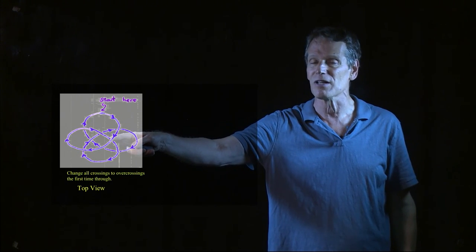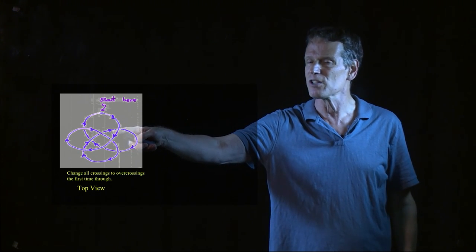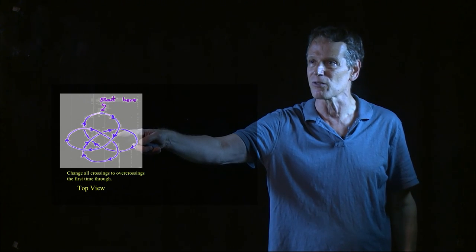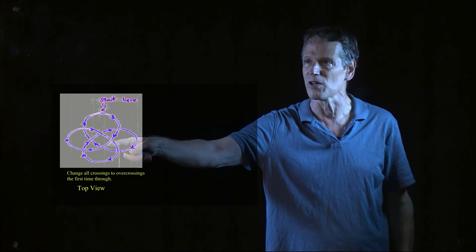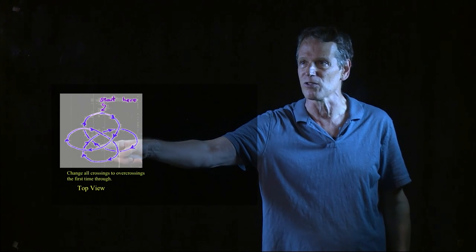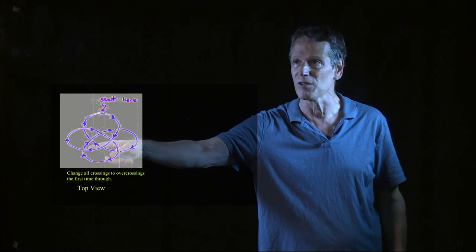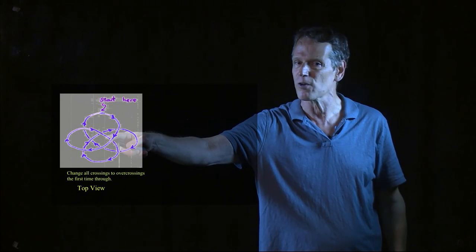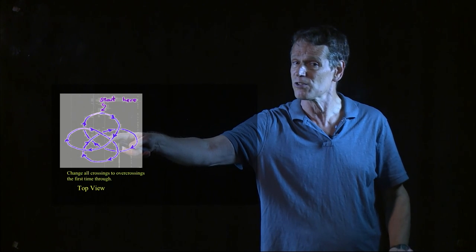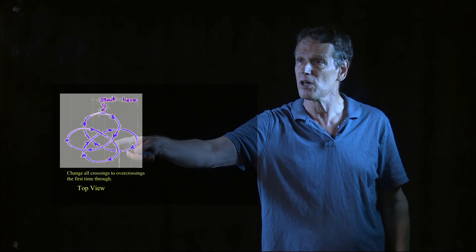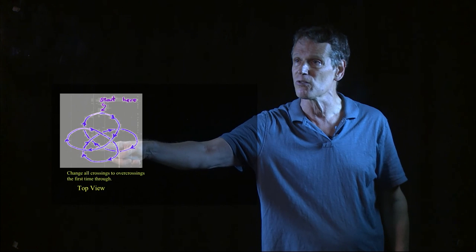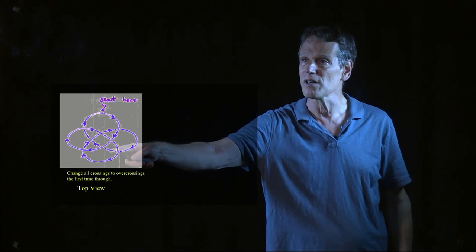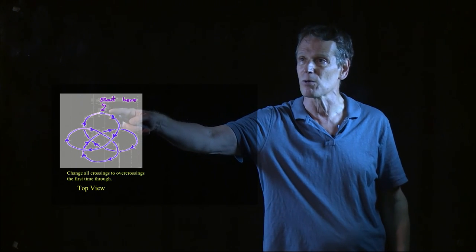So the first time I hit this crossing, I make it an overcrossing. The first time I hit this crossing, I make it an overcrossing. The first time I hit this crossing, I make it an overcrossing. The first time I hit this crossing, I make it an overcrossing. Keep going around. So I make that an over and over. But when I come back to a crossing I've already set, I do not change it. I leave it alone. And then I continue along, around, and I make it, that's a new crossing over. I've already set that one. That's an under. This is a new crossing over. That's an under, under, under, under, under, all the way around until I get back to where I started.